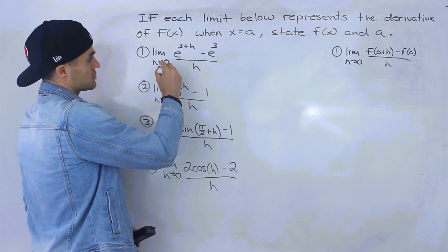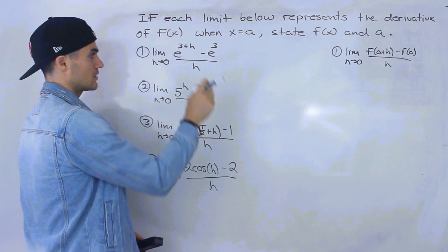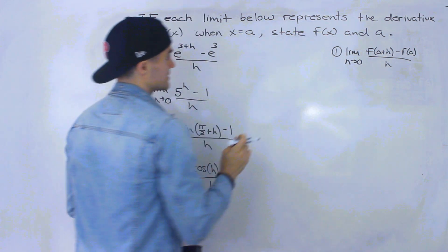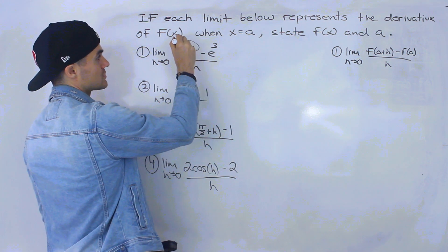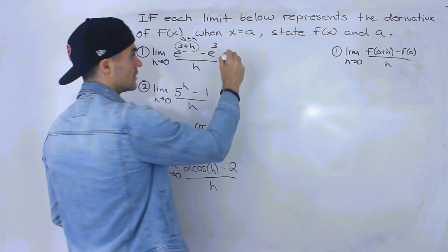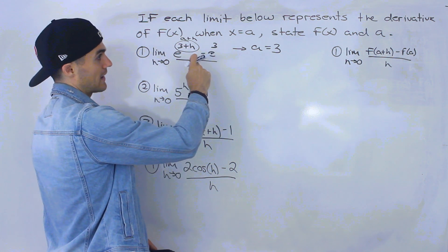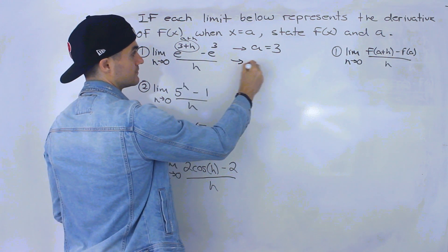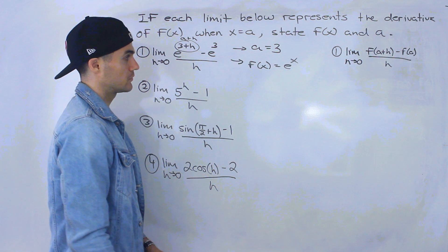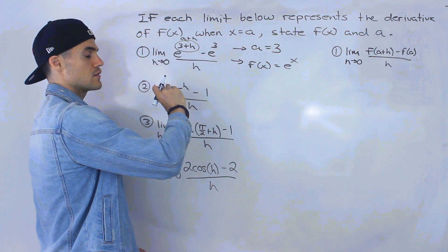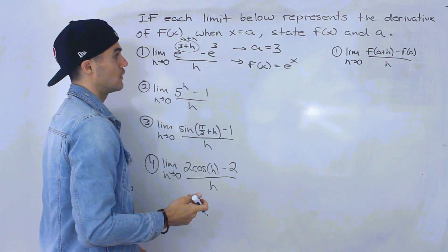So first one: we have the limit as h approaches zero of e to the power of (3+h) minus e to the power of 3, all over h. Applying the derivative definition, what is the a value? Notice we have (3+h) here, which matches (a+h), so the a value is 3. We have f(a+h) minus f(a), so the function is e to the power of x. This gives us the derivative of e^x at a value of 3.